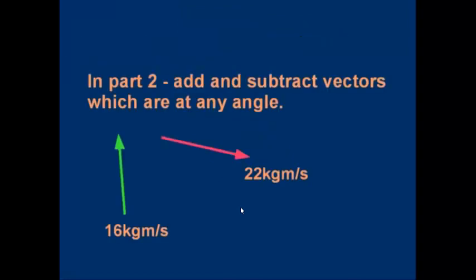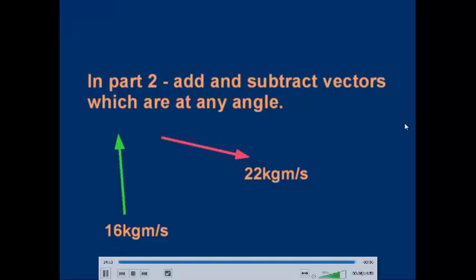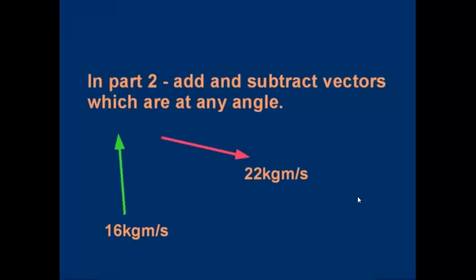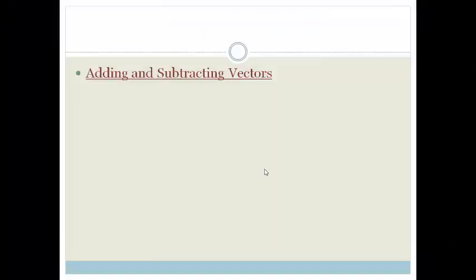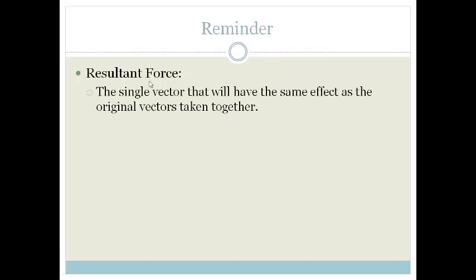That's it for part one. In part two we're going to learn how to add and subtract vectors which can be at any angle. Thank you for watching — hope to see you in part two. What we're not doing is subtracting; we're adding vectors that have been assigned a negative value because they're in the opposite direction. Remember that a resultant is a single vector that will have the same effect as the original vectors taken together. Thank you — we'll be using what we have learnt here in future lessons. Have a great day.